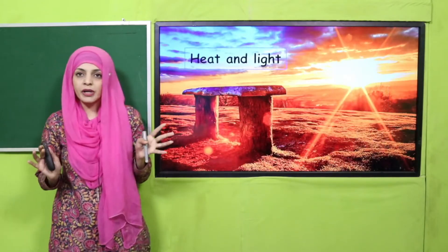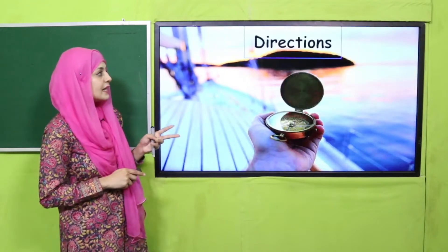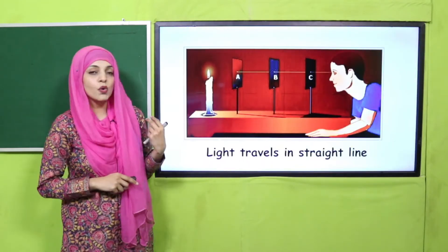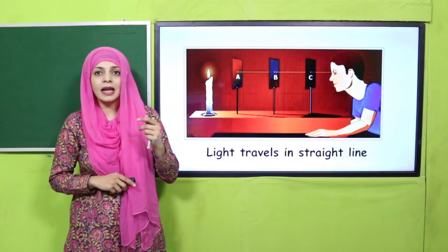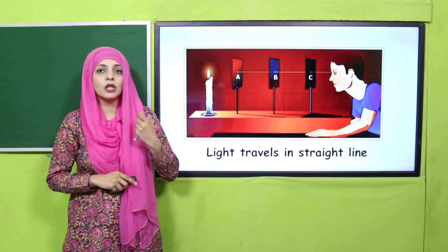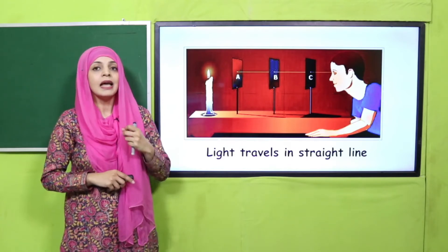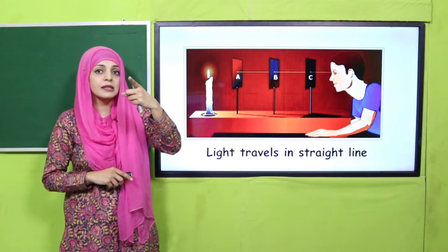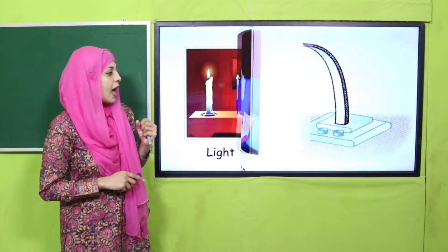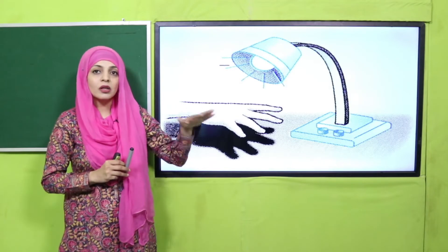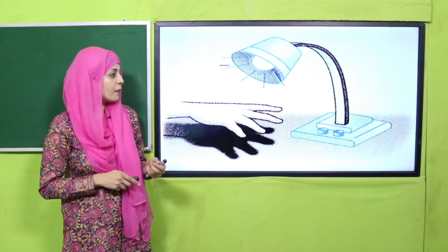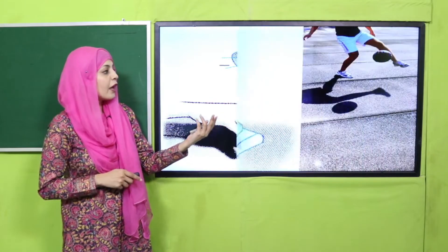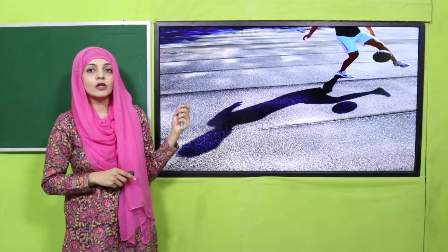Very nice. You already know that the sun gives us heat and light, it tells us directions. And you know that light - whether it's sunlight, light from a bulb, tube light, torch, or mobile - all forms of light travel in a straight line. And when you block the light, shadows are formed. Even if you block a lamp's light, shadows will form.